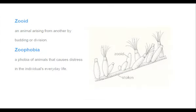The next word with this root is 'zoid', which means an animal arising from another by budding or division. As we see in this slide, there is a picture showing a plant growing from the same one — that process is called budding. We have studied this budding process in school during science class.